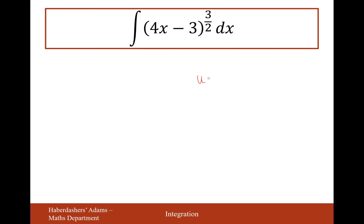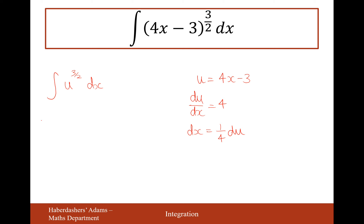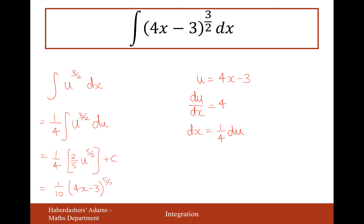Now u = 4x − 3. The integral is u^(3/2) dx. Differentiating: du/dx = 4, so dx = (1/4) du. With the 1/4 factored to the front, we integrate u^(3/2): increasing the power to 5/2 and dividing gives 2/5. With 1/4 × 2/5 = 1/10, the answer is (1/10)(4x − 3)^(5/2) + c.